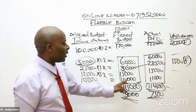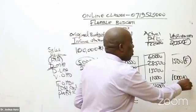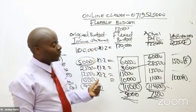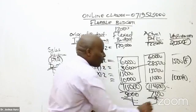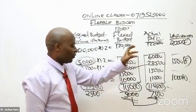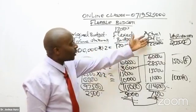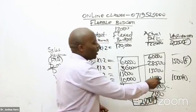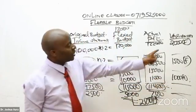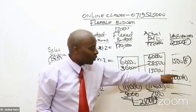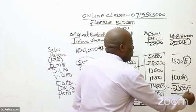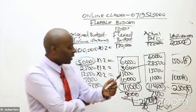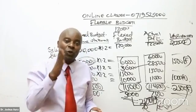Fixed overheads: flexed budget $10,000 vs actual $11,000 — a difference of $1,000 adverse, because actual expenditure is higher. Combining all variances: $2,000 favorable plus $1,500 favorable minus $1,000 adverse gives $2,500 favorable. This agrees with the difference between our flexed budget profit of $5,000 and actual profit of $7,500, confirming everything has reconciled.